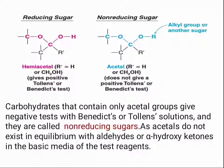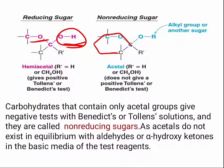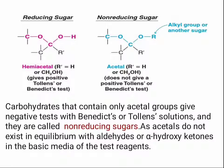The structure of a reducing sugar has one OH and one OR group at the anomeric carbon — this is the hemiacetal form. In the acetal form, the cyclic structure has OR connectivity at both positions, making it a non-reducing sugar. Carbohydrates that contain only acetal groups give a negative test with Benedict's or Tollens' solution and are called non-reducing sugars, because acetals do not exist in equilibrium with aldehydes or alpha-hydroxy ketones in the basic medium of the test reagents.